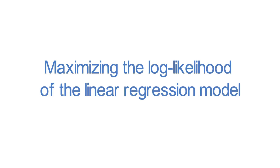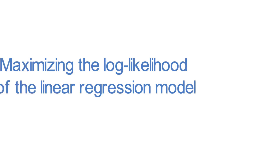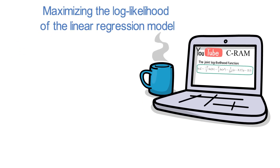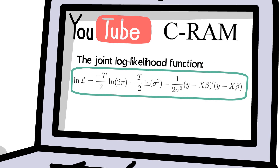In this video, I'm showing you step-by-step how to analytically maximize the log-likelihood function of the Gaussian linear regression model to find the maximum likelihood estimates. In a previous video of that sequence, I've verified that the respective joint log-likelihood function takes the following form.